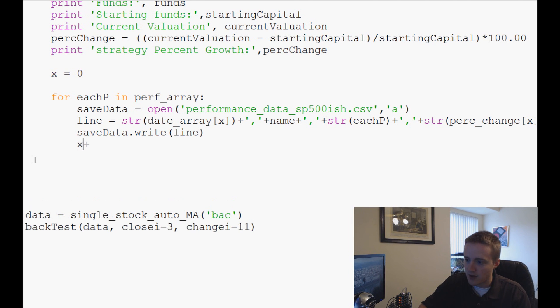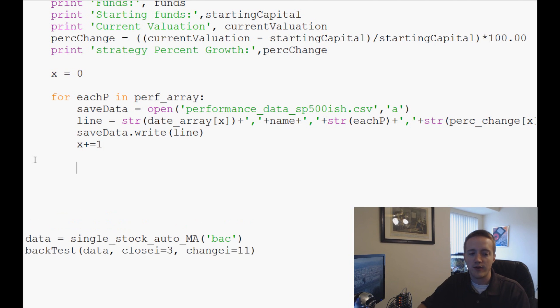And then basically what we want to do is save data.write that entire line. And then we'll do X plus equals one. And then once we've gone through that entire loop, we're going to do save data.close. And then we can actually close out of all of this data.